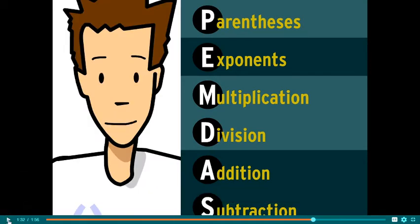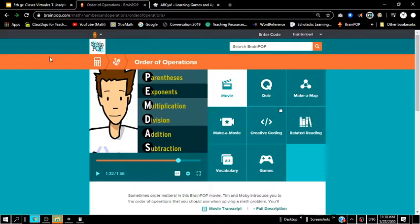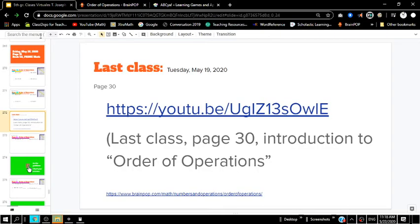We understand that first we do parentheses and then exponents. Now, in fifth grade, we're not going to be looking at exponents inside of order of operations — later on in sixth grade you probably will see them more often. But for today's purposes, we need to understand to do multiplication and division first, whichever one comes first, and then addition and subtraction.